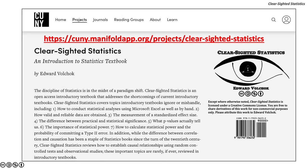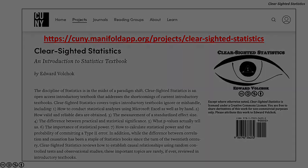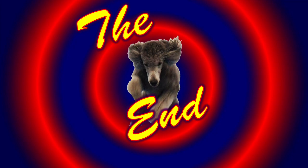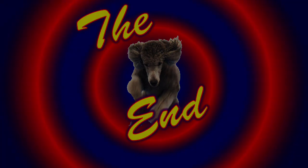You can access Clear-Sighted Statistics for free, along with its Excel and PowerPoint files on the CUNY Commons. The URL is https://cuny.manifoldapp.org/projects/clear-cited-statistics.